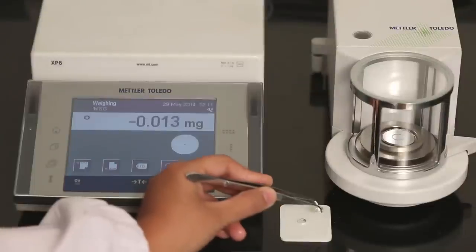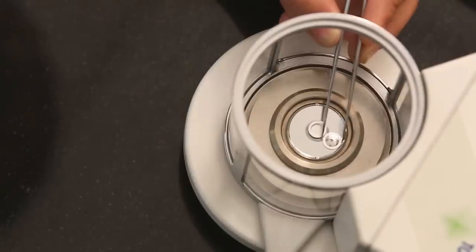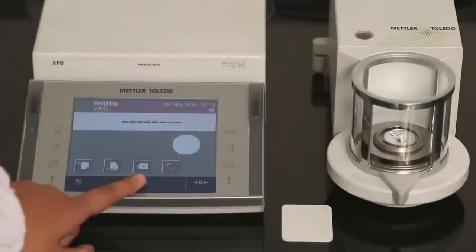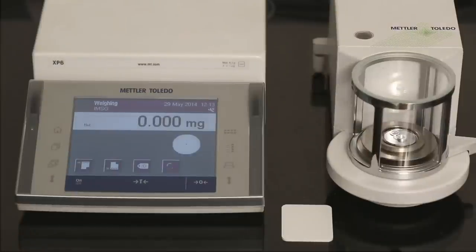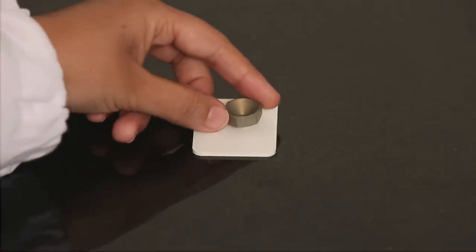Place the crucible and lid on the balance and tare. Place the funnel contained in the crucible box on the crucible and fill in about 10 milligrams of powder with a spatula.